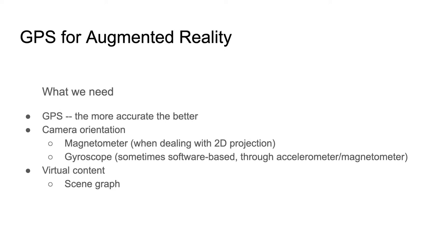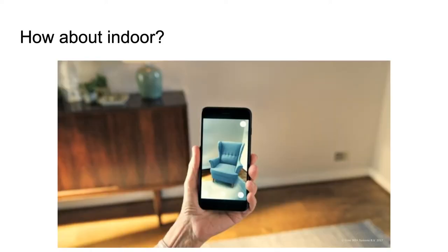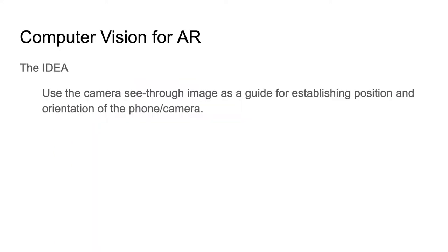For indoor use, consider the IKEA app which allows people to see how furniture would look in their flat. The user observes an empty corner augmented with a realistically-looking armchair. GPS is not suitable here — indoors you may not have GPS signal at all, and even if you do it's often unreliable with large error, making it impossible to pinpoint exactly where a corner of a flat is.